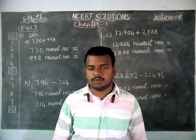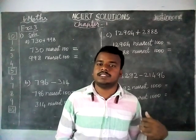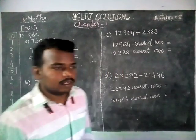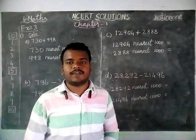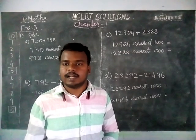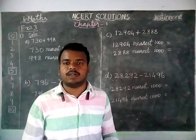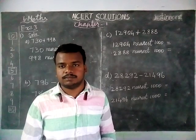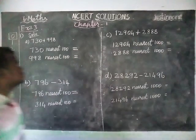First question, we are going to round off the given numbers by general rule. The meaning of general rule: if it is a 3-digit number, we have to round off to nearest 100. If it is a 4-digit number, we have to round off to nearest 1000. That's all. Now we are going to see it.